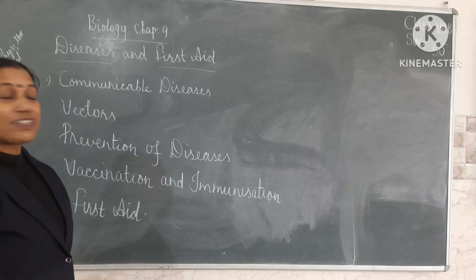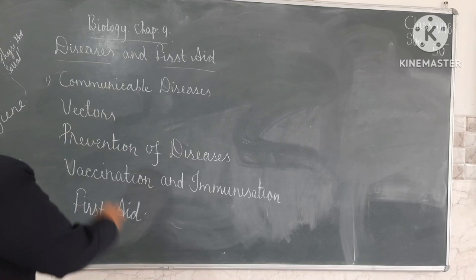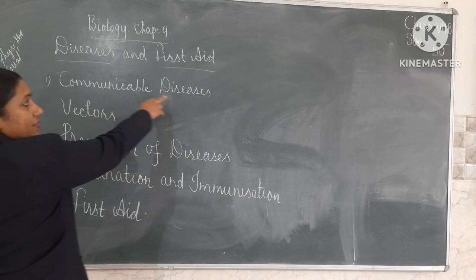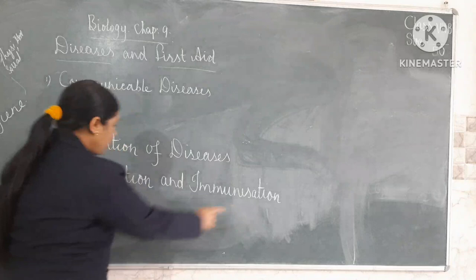Good morning children. Today we are going to discuss the chapter of biology, Chapter 9, diseases. In this chapter, many contents are there, but today we are going to discuss communicable diseases. The other learning objectives are vectors, prevention of diseases, vaccination and immunization, and parasites.